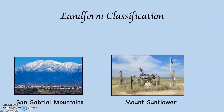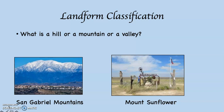Landform classification is a slightly tricky business. What is a hill, or a mountain, or a valley for that matter? Well, largely what we do is we apply two terms and then we determine what something is.